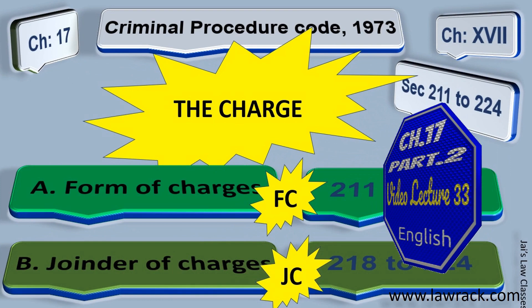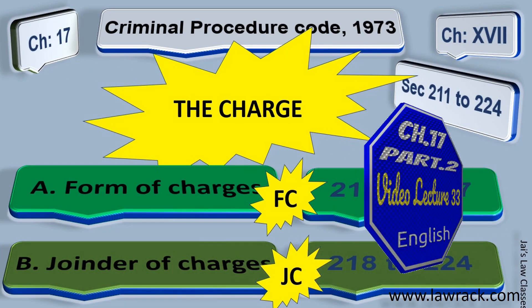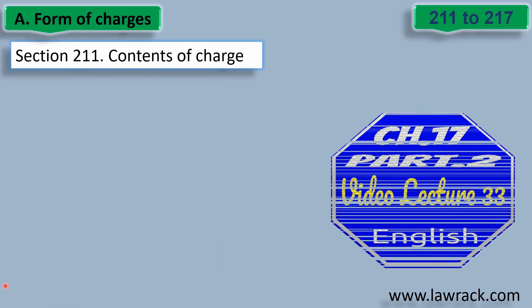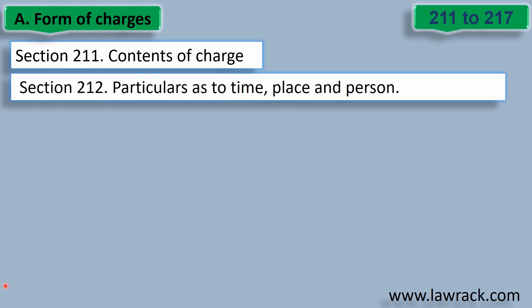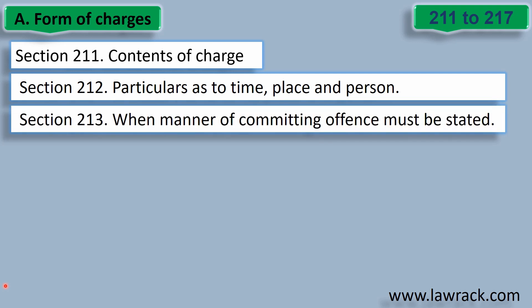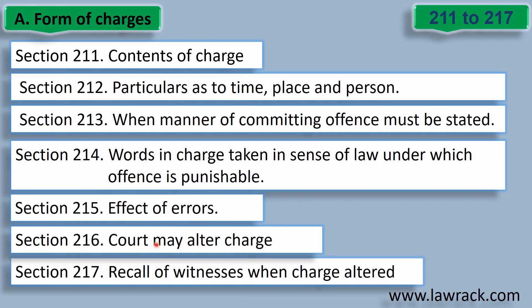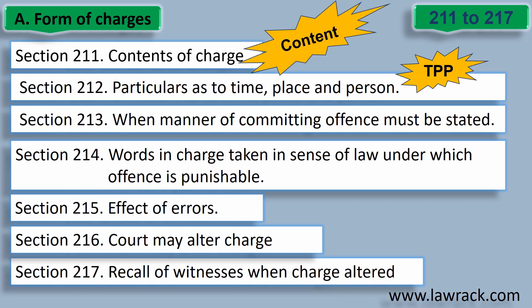Chapter 17: The Charge. In part 1, we covered how to learn all the sections of chapter 17 through trick words. Let's quickly revise: Section 211 says the content of the charges, 212 regards particulars as to time, place and person, 213 says the manner of committing an offense, 215 says the effects of errors, 216 says the court may alter the charge, and 217 says recall of witnesses when charge is altered. Today we are going to cover Section 211 — the contents of charge.